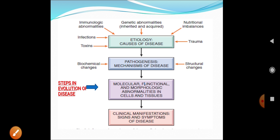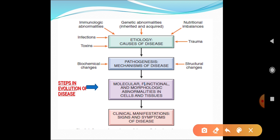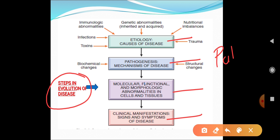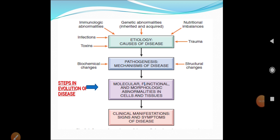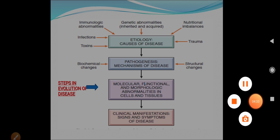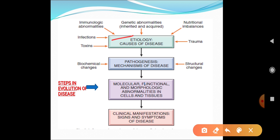This is a beautiful figure from Robbins' Textbook of Pathology, 10th edition, showing the steps in the evolution of a particular disease. The definition of pathology includes four structural parts: it starts from etiology, then pathogenesis, then morphological findings seen in the cells, and finally clinical manifestation. These four steps define pathology.